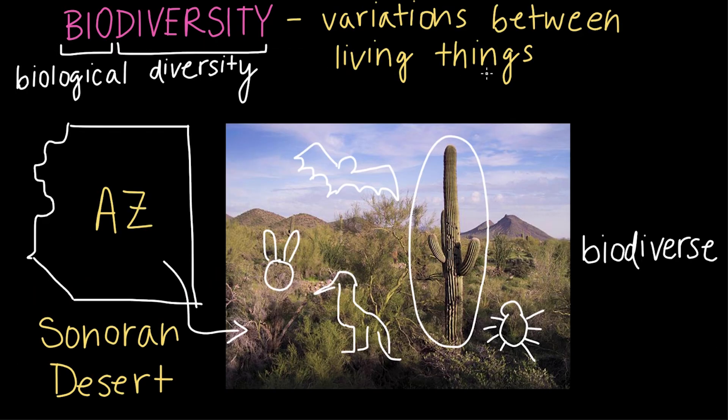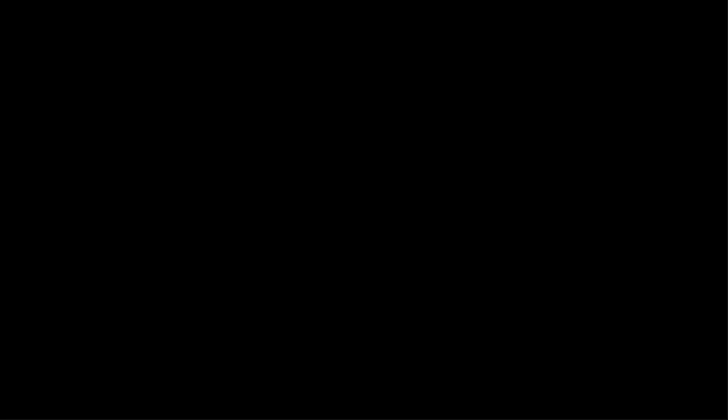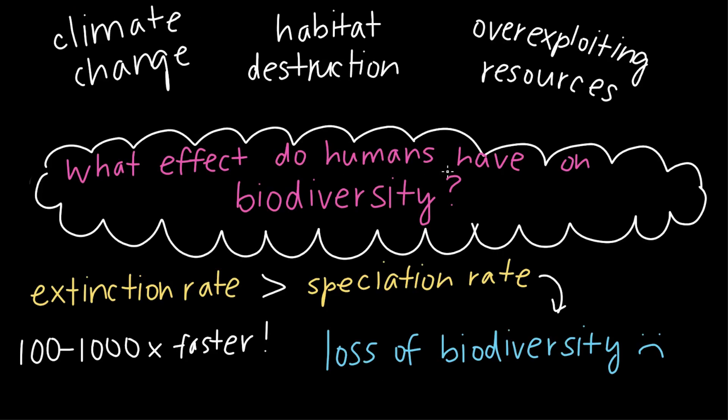So today we learned about biodiversity, which is the variety of life present on Earth. We talked about three different levels of biodiversity, moving from genetic biodiversity to species, and then ecosystem biodiversity. And we also talked about how biodiversity isn't stagnant or fixed in place. We have speciation events that can increase biodiversity and extinctions that decrease biodiversity. And finally, we learned that human actions are threatening biodiversity as we currently have a greater extinction rate than speciation rate.